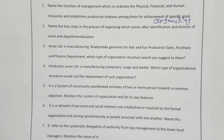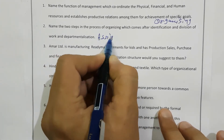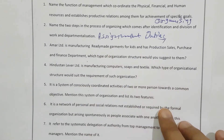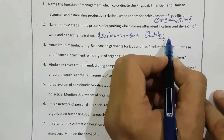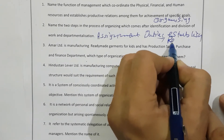Name the two steps in the process of organizing which come after identification and division of work and departmentalization. The first step is identification and division of work, then departmentalization. After that, the next steps are: assignment of duties, and then establishing reporting relationships.